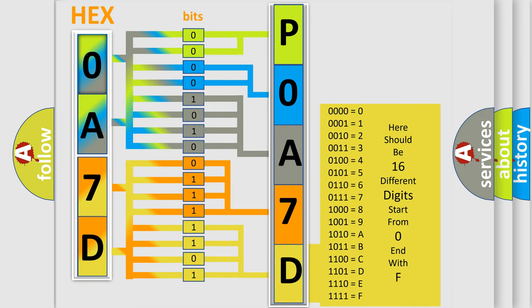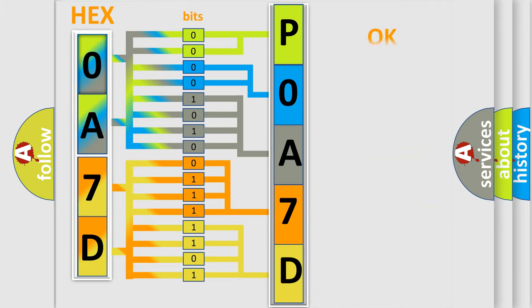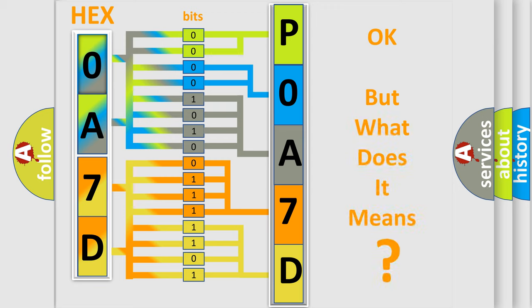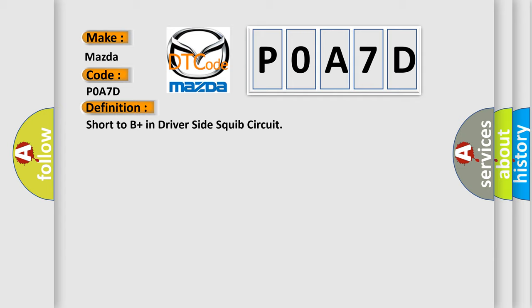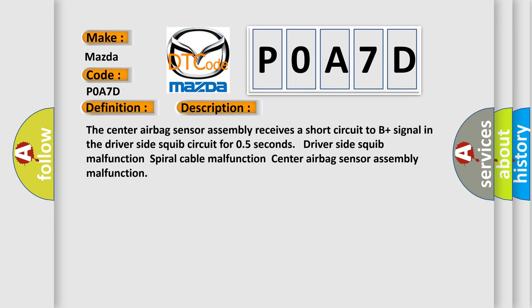We now know in what way the diagnostic tool translates the received information into a more comprehensible format. The number itself does not make sense to us if we cannot assign information about what it actually expresses. So, what does the diagnostic trouble code POA7D interpret specifically for Mazda car manufacturers? The basic definition is: short to B plus in driver side squib circuit. The center airbag sensor assembly receives a short circuit to B plus signal in the driver side squib circuit for 0.5 seconds — driver side squib malfunction, spiral cable malfunction, center airbag sensor assembly malfunction.